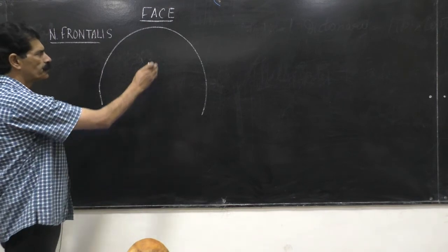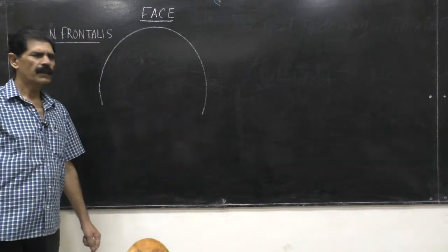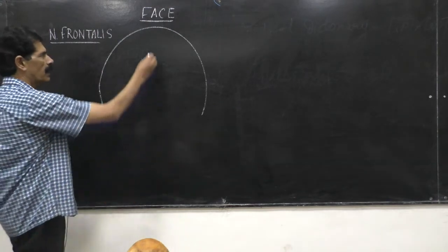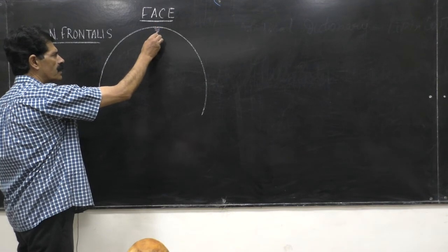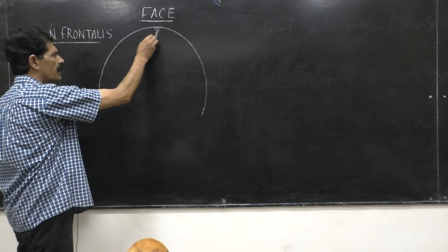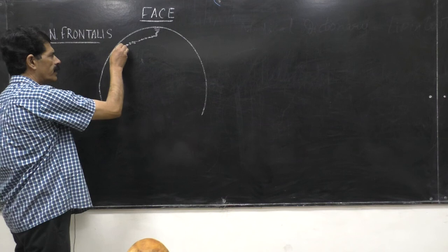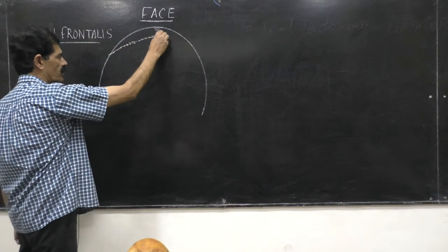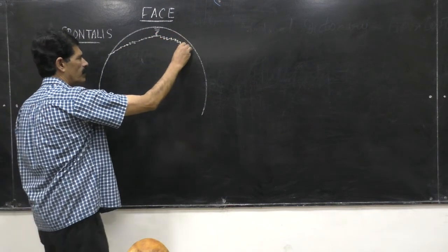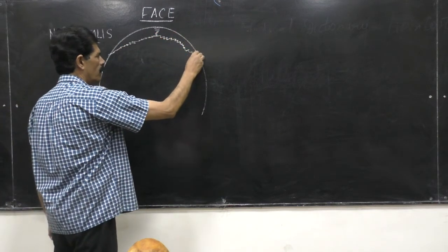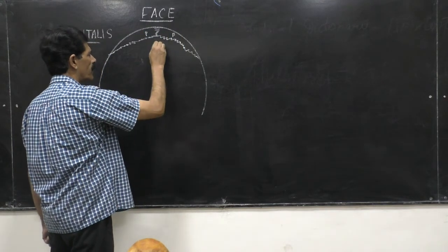Here we see the frontal bone, and from the frontal bone comes the sagittal suture, which continues later into the coronal suture. So here are the two parietal bones meeting the frontal bone.